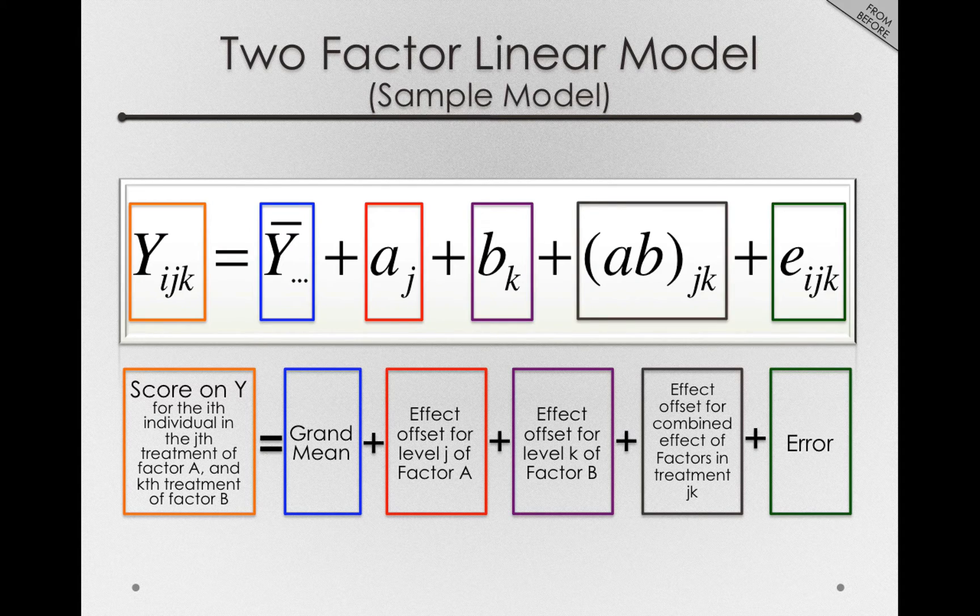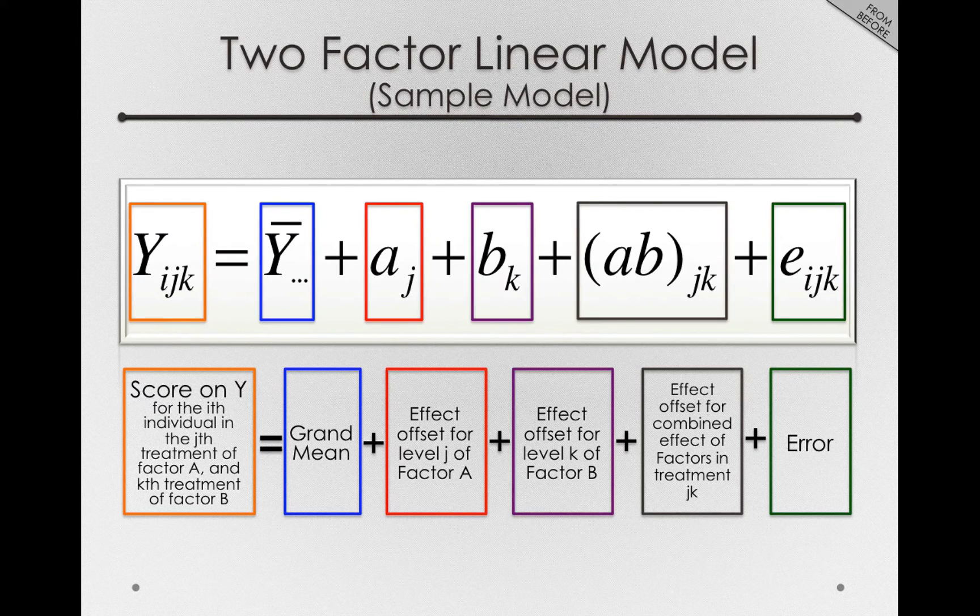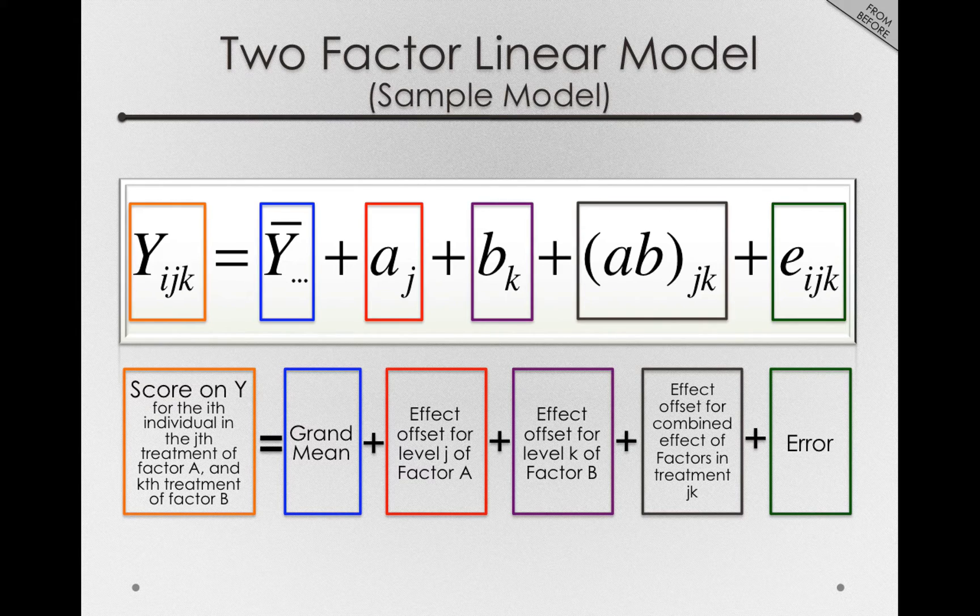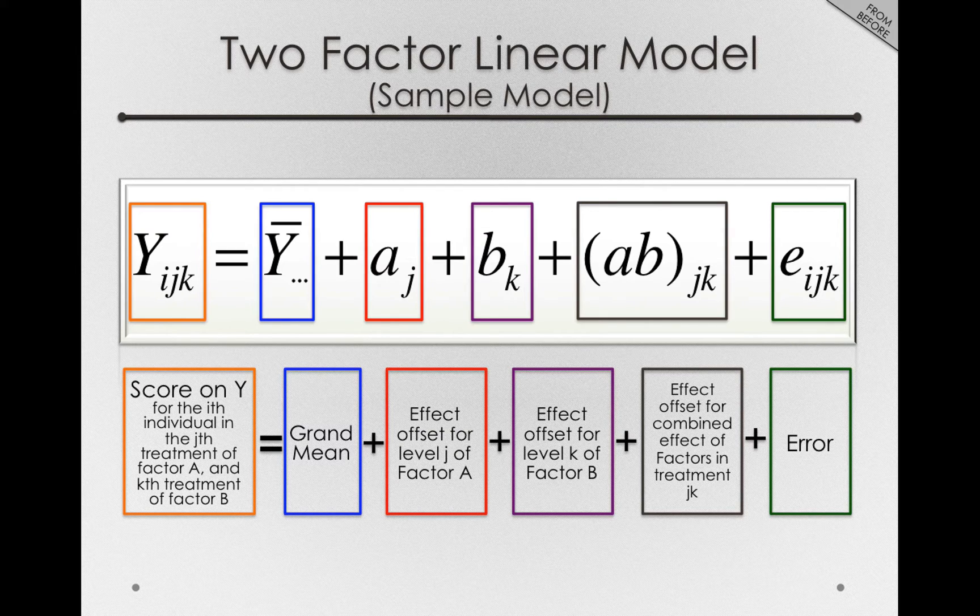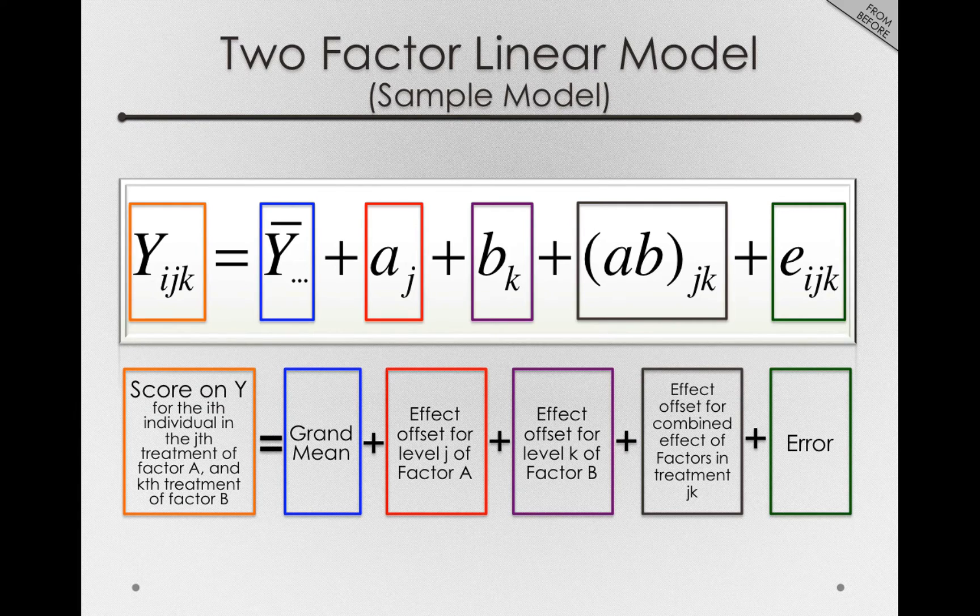Previously, I showed you the two-factor linear model, and remember, the interior component, excluding error, was simply a way of representing the different group means. That is, whatever combination of factors we had, the interior portion simply represented the decomposition of those group or condition means.